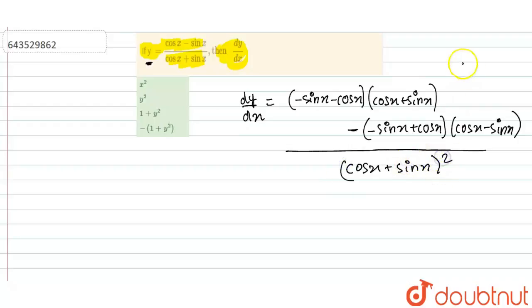We have just applied u by v rule for differentiating this. So simplify this further, we will get this as,